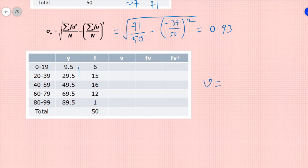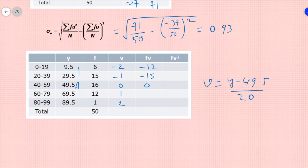So I will assume here, let v equals y minus 49.5 by 20, step deviation method. So this will be minus 2, minus 1, 0, 1, 2. f into v: 6 into minus 2 will give me minus 12, 15 into minus 1 is minus 15, 0, 12 into 1 is 12, 1 into 2 is 2. So the total will be minus 27 plus 14 will give me minus 13.